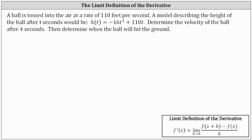To determine the velocity of the ball after four seconds, we'll have to determine the velocity function, which is equal to the derivative of the height function. And then to determine when the ball will hit the ground, we will set h of t equal to zero and solve for t.